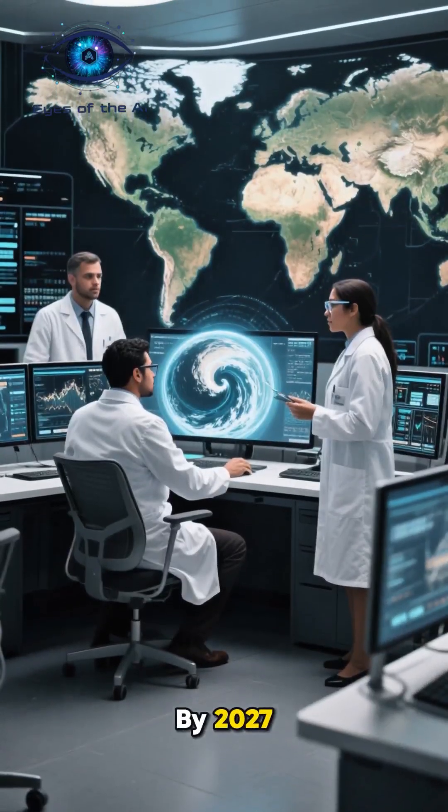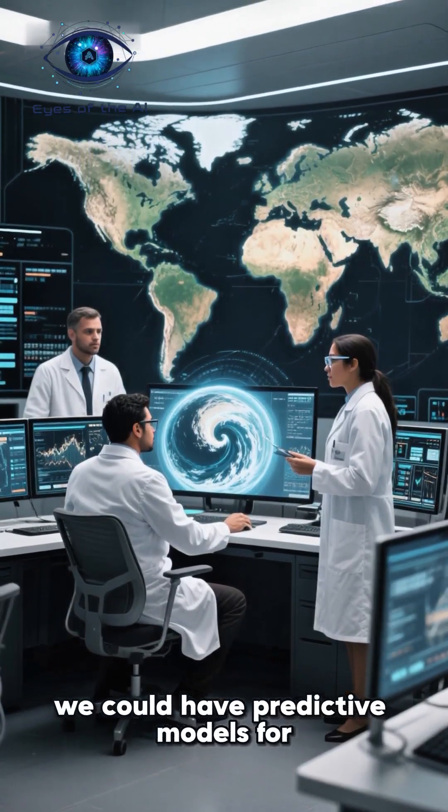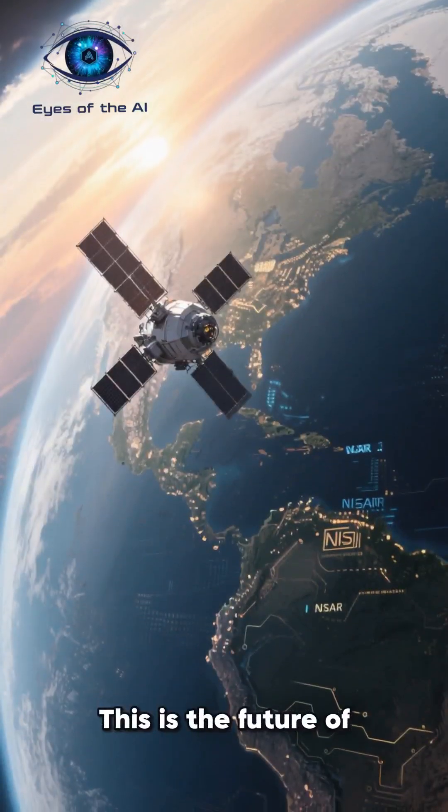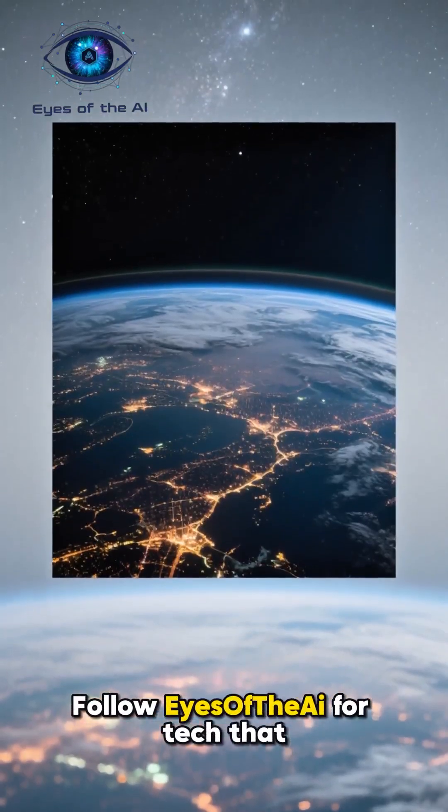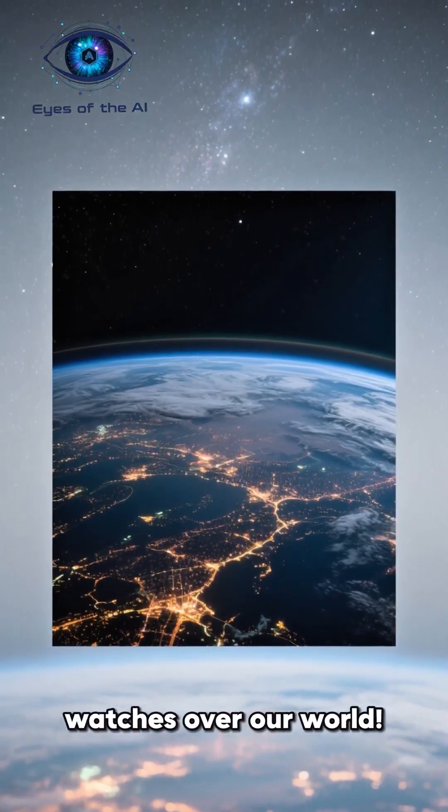By 2027, we could have predictive models for every climate event. This is the future of planetary intelligence and environmental monitoring. Follow eyes of the AI for tech that watches over our world.